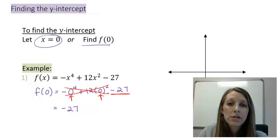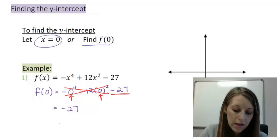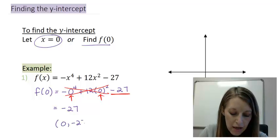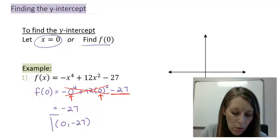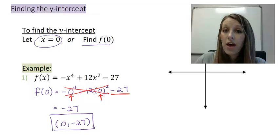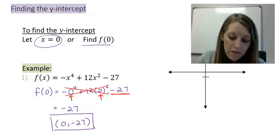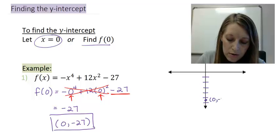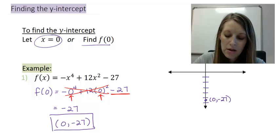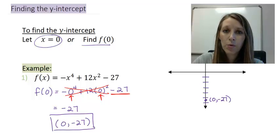Now a y-intercept is an ordered pair that we can graph, so your final answer should be in ordered pair format. So in this example, our y-intercept is (0, -27). If I wanted to graph this, I would just plot that on my y-axis. So let me go by 5, negative 5, 10, 15, 20, 25, 30. So my y-intercept would go somewhere around here, which is down approximately negative 27 units.